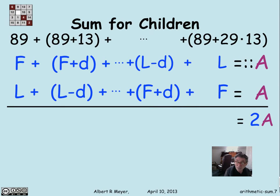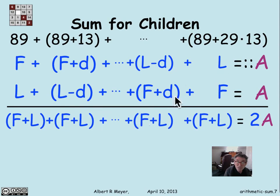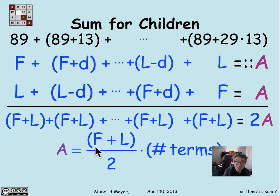I get 2A, of course, but every one of these terms, this is an F plus L. This is an F plus d plus L minus d. It's F plus L. This last one is an F plus L. Every one of these pairwise subsums comes out to be F plus L. And now we have a nice simple formula that A is equal to the sum of the first term plus the last term divided by 2 times the number of terms.